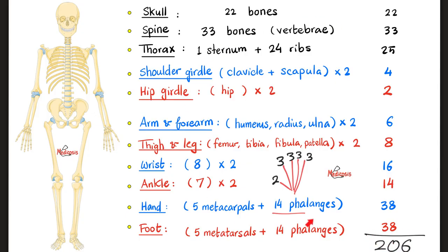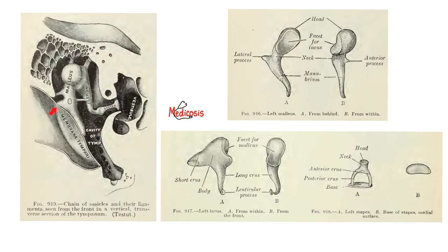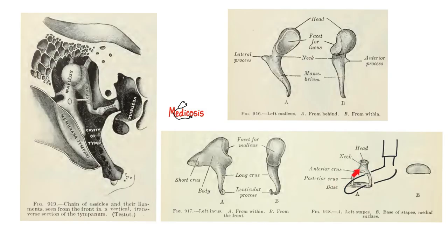Shamefully, this tally of 206 bones missed some bones, including the ossicles of your ear. Each ear has 3 ossicles — a tiny bone. Your right ear has 3 and the left ear has 3, for a total of 6 bony ossicles. The first is called the malleus, the second the incus, and the third the stapes — otherwise known as the hammer, the anvil, and the stirrup. The hammer hits the anvil; the stapes is called the stirrup because it looks like a riding stirrup. These 6 ossicles were not counted among the 206 bones.